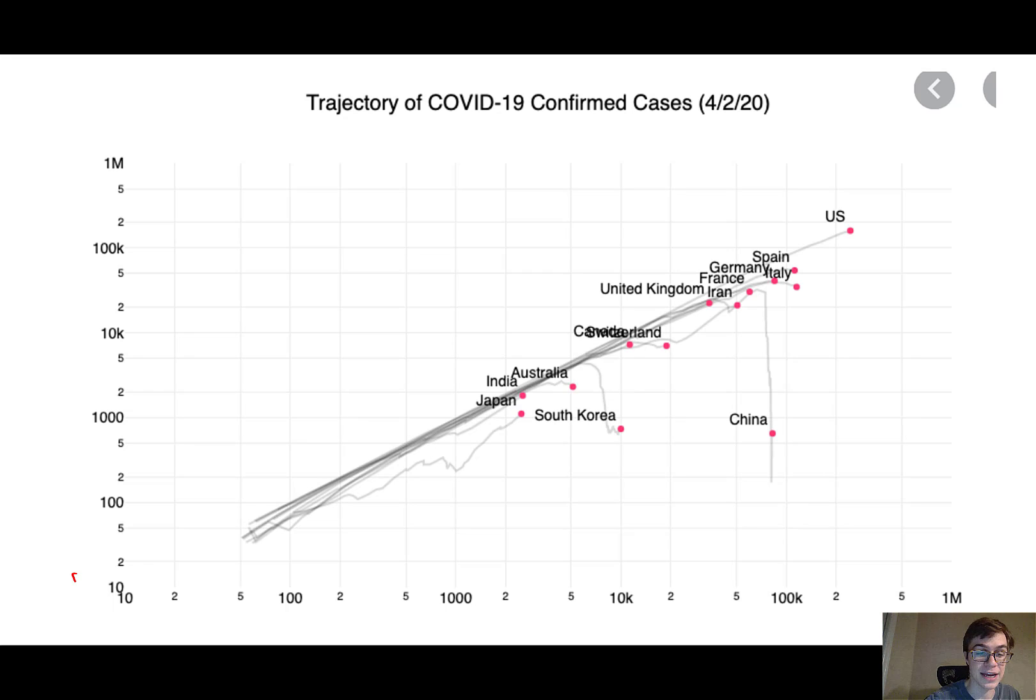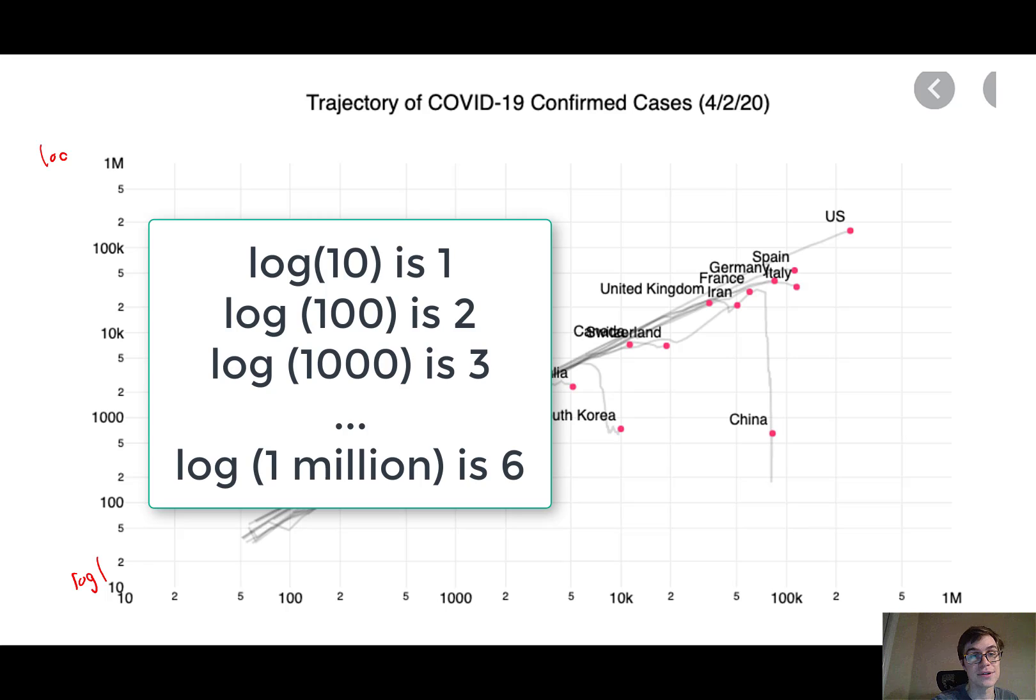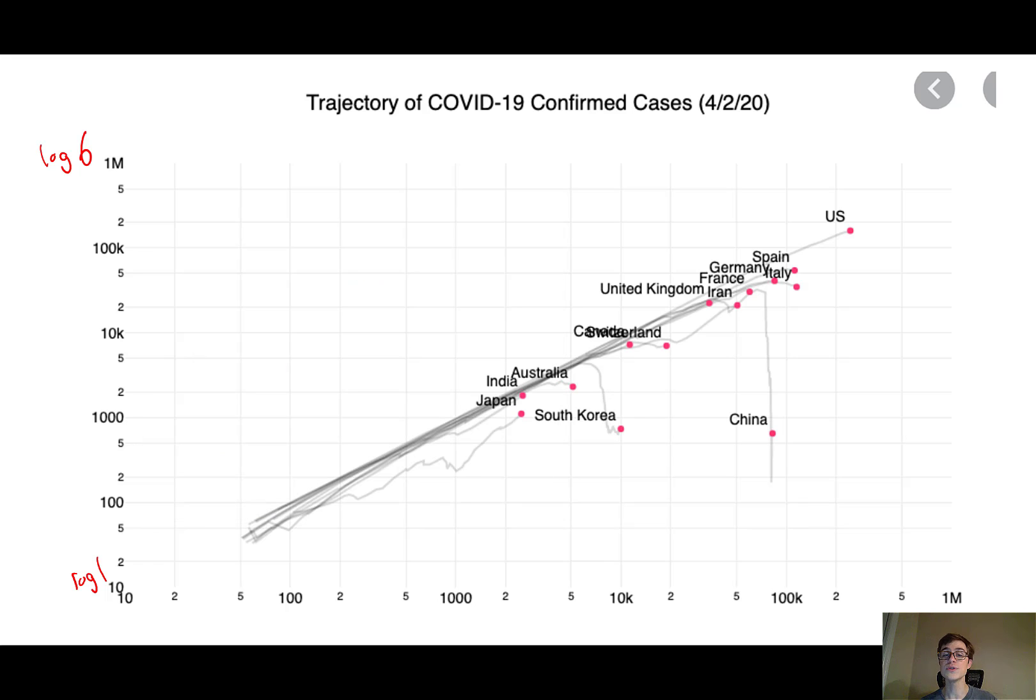Down here, we have log 1, and up here, we have log 6. We use this because it gives us a bunch of detail at the lower levels and at the upper levels. It lets us fit all the information onto one graph without having some of it get very squished.